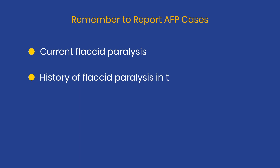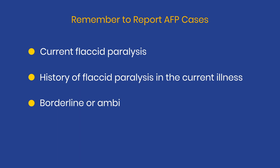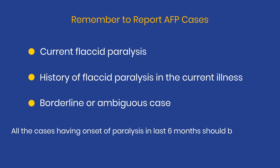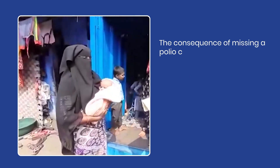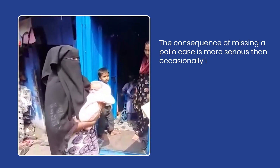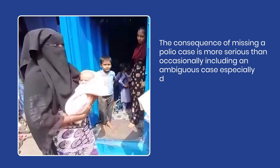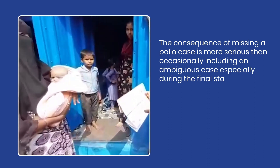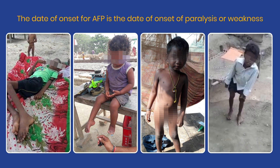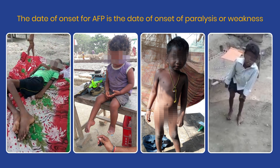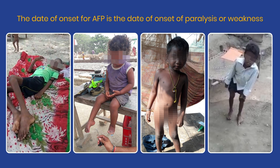Remember to report all AFP cases having current flaccid paralysis, or history of flaccid paralysis in the current illness, or borderline or ambiguous presentations. All cases having onset of paralysis in the last 6 months should be reported. The consequence of missing a polio case is more serious than occasionally including an ambiguous case, especially during the final stages of polio eradication. The date of onset for AFP is the date of onset of paralysis or weakness.